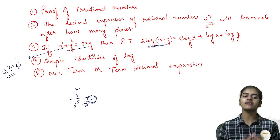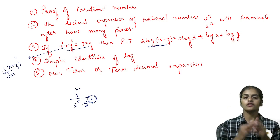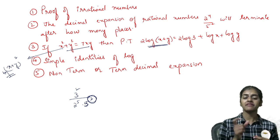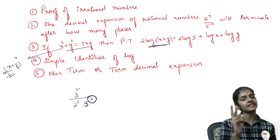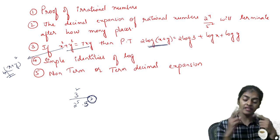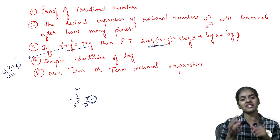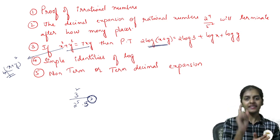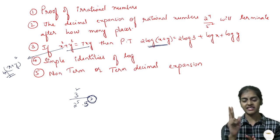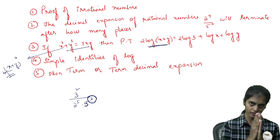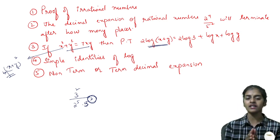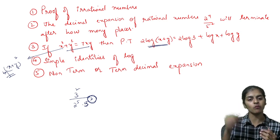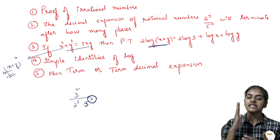The next model is again on decimal expansions. When you see the denominator of any rational number, if it has only 2 or 5, it's terminating. If along with 2 and 5 it has any other number, it's non-terminating. First, simplify the given rational number.